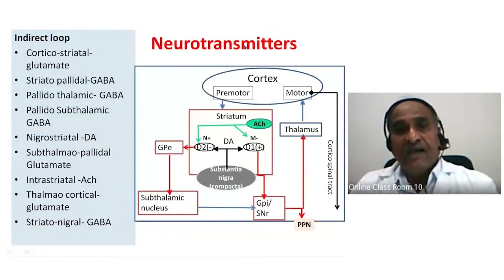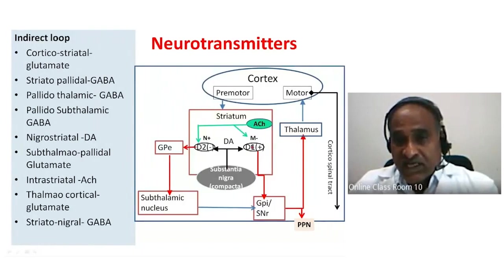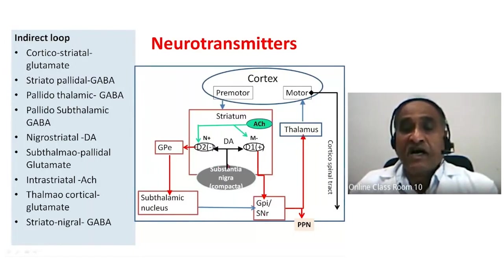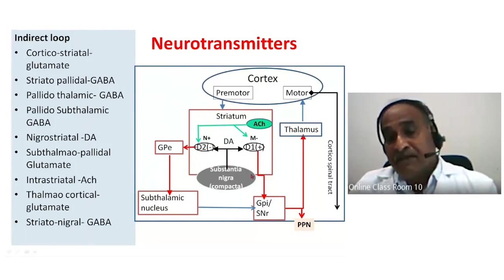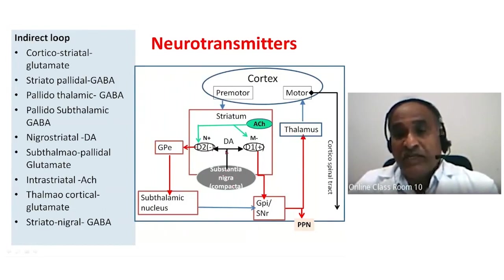In addition to the direct and indirect circuits, there is another nucleus in the midbrain — the substantia nigra. The substantia nigra sends dopaminergic neurons to the striatum via what is known as the nigrostriatal tract. This from here to here is the direct circuit, while through the GPE and subthalamic nucleus is the indirect circuit.